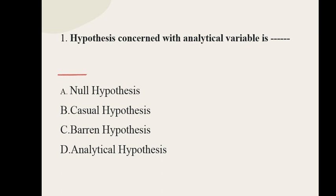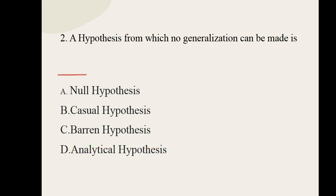Question number one: hypothesis concerned with analytical variable is dash. Options: null hypothesis, casual hypothesis, barren hypothesis, analytical hypothesis. The correct option is analytical hypothesis. Question number two: a hypothesis from which no generalization can be made is dash. Options: null hypothesis, casual hypothesis, barren hypothesis, analytical hypothesis. The correct option is barren hypothesis.